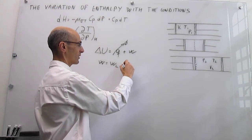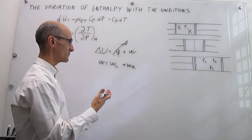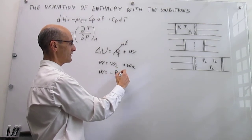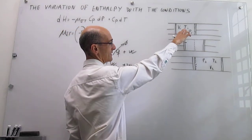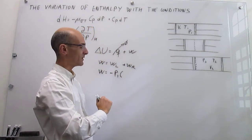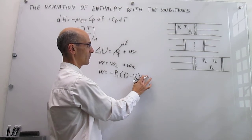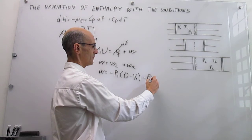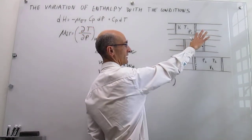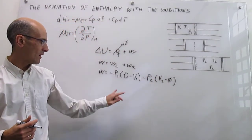Since the pressures are constant and we can control that, the expression for work is quite simple. For the compression on the left, this is minus P1 times the change in volume. The final volume in the left compartment is zero — when compression finishes the piston is flush against the membrane — so the change is zero minus V1. For the expansion on the right, this is minus P2 times (V2 minus zero), since the initial volume there is also zero when expansion starts with the piston flush against the membrane.